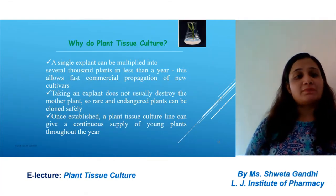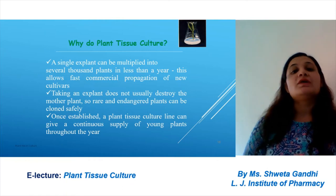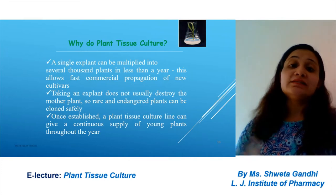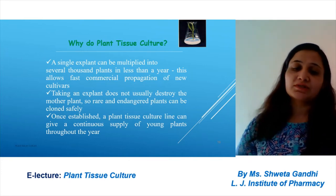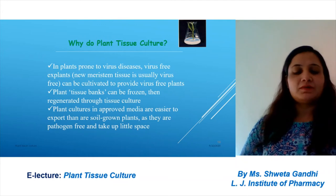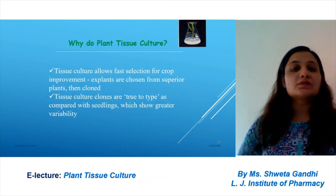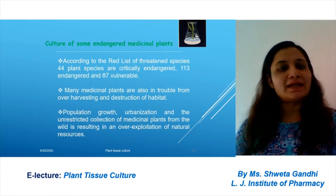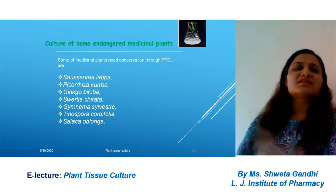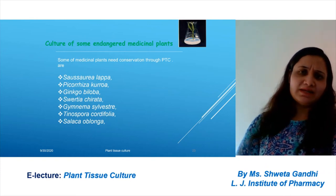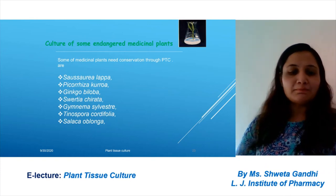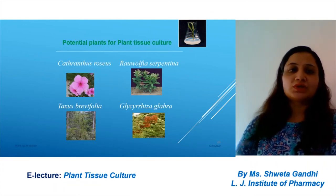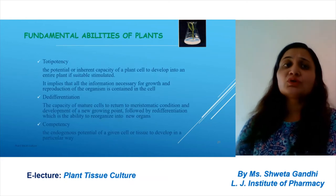Why are we doing plant tissue culture? A single explant can be multiplied into several thousand plants in less than a year — it is a fast process. We can develop disease-free plants and tissue culture allows fast selection of crops. Some endangered medicinal plants which can be produced by plant tissue culture include Ginkgo biloba, Gimnia silvestri, and Catharanthus roseus.